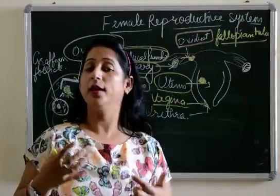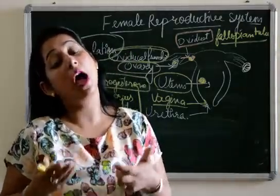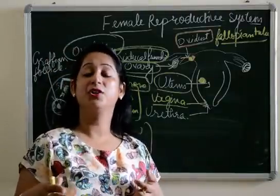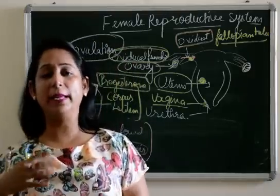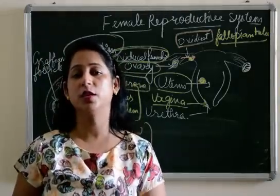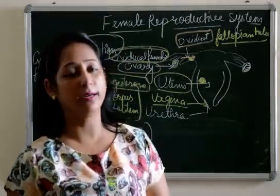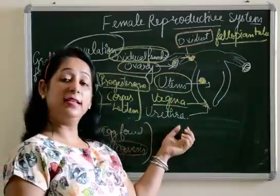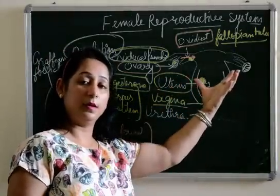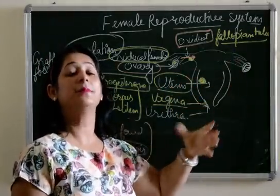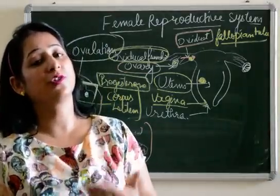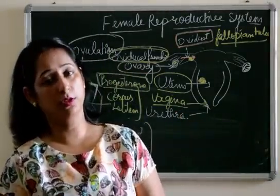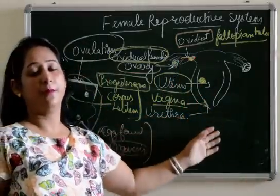The next part is the vagina. The vagina is the part of the female reproductive system through which the full-grown baby moves out from the body of the female — that is the process of parturition. The full-grown baby comes out from the body of the female by the process of parturition through the vagina. These are the main reproductive parts responsible for the process of reproduction.